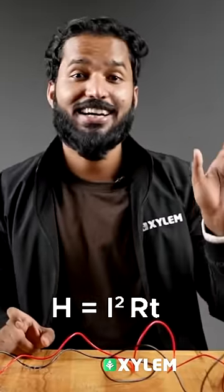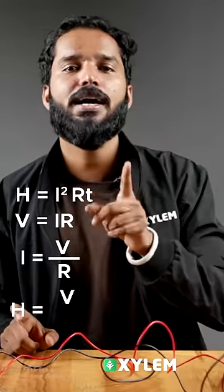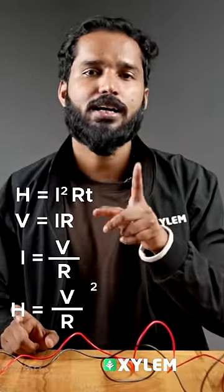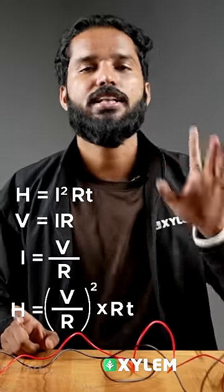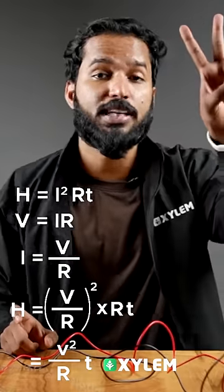V equals IR. When you substitute in the equation, H equals V by R the whole squared into R into t, which gives V squared by R into t.